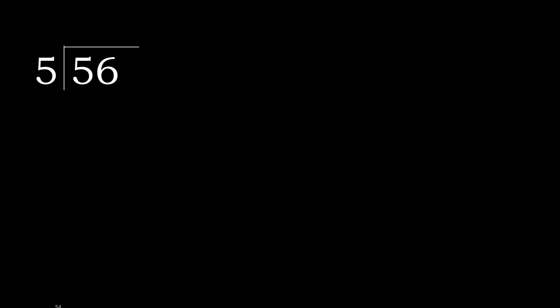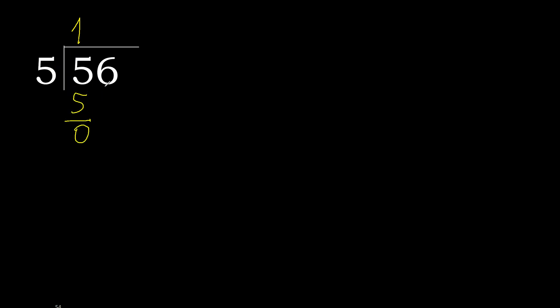56 divided by 5. 5 is not less, therefore we work with 5. 5 multiplied by which number is nearest to 5 but not greater? 5 multiplied by 2 is 10 — that is greater. 5 multiplied by 1 is 5 — that is not greater. 5 minus 5 is 0. Next.